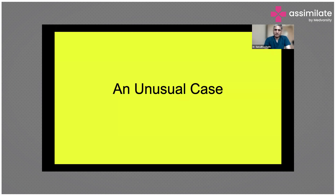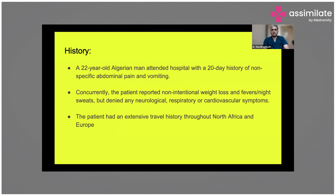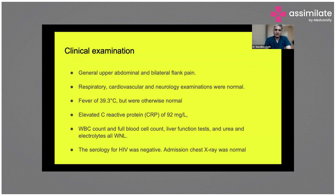I just started with a very unusual case. This case is basically a 22-year-old man who attended hospital. There is a long history of abdominal pain and vomiting, and this patient concurrently reported non-intentional weight loss, fever, night sweats, and no other systemic symptoms. This patient had extensive travel history throughout North America and Europe. On clinical examination, the findings were mild abdominal pain and bilateral flank pain; all systemic examinations were unremarkable.